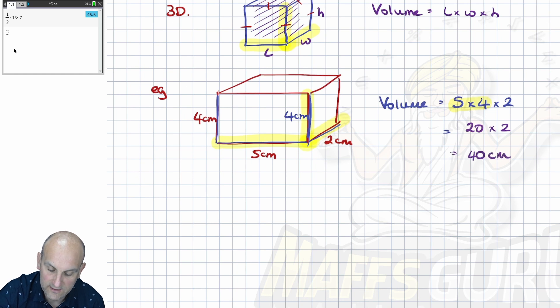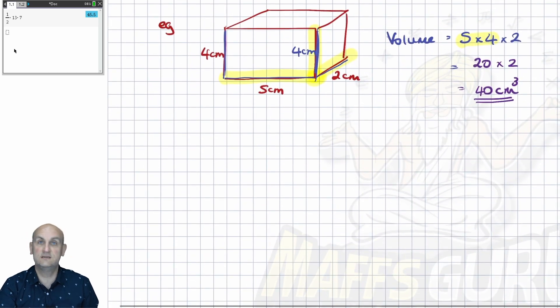My units are centimeters, but what is the floaty number? Well, because we're doing a length times the length times the length, we've got three lengths. And so, believe it or not, we have a floaty three. The shape is three-dimensional. And what you notice there is that my units are centimeters cubed.